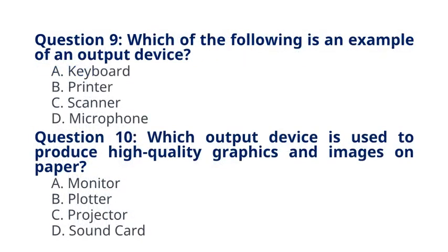Question 9: Which of the following is an example of an output device? A. Keyboard. B. Printer. C. Scanner. D. Microphone. The correct answer to question 9 is option B: Printer. Printers are output devices that produce a hard copy of information.